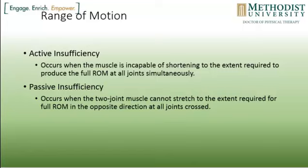Some of the things that can limit range of motion — this is something you learned in anatomy, so this should be a review. One is active insufficiency. This occurs in a two-joint muscle when a muscle is incapable of shortening to the extent required to produce a full range of motion.